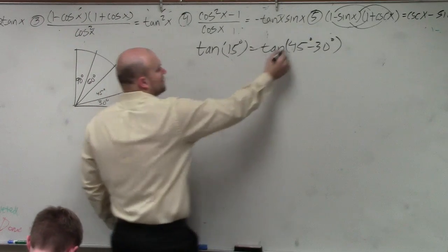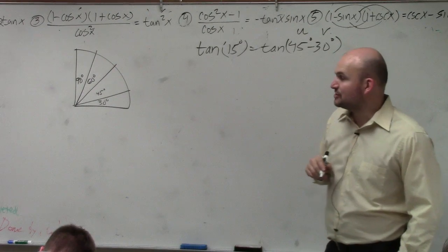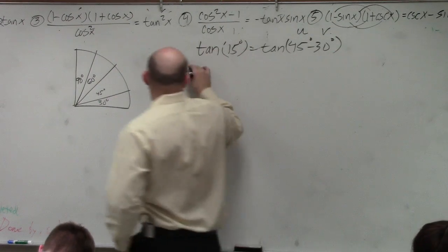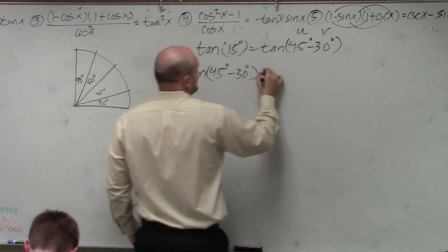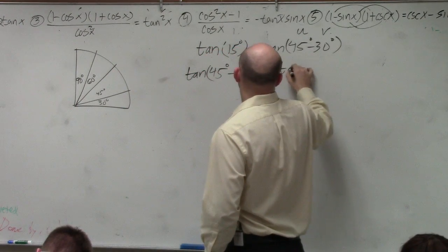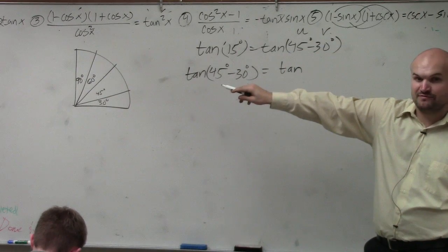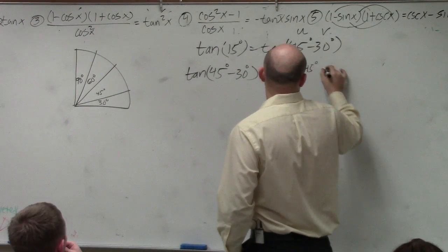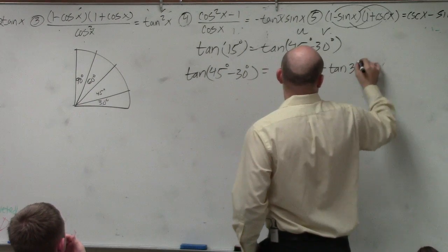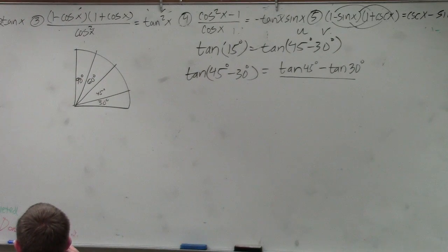So to go ahead and do this, I'll say this is my u, this is my v. You guys have the formulas now in front of you as well as up there. Tangent of 45 minus 30 degrees is equal to the tangent of u. Now we're doing subtraction, so subtraction is the bottom sign. The bottom sign between tangent of u and tangent of v is subtraction. So I'm going to do tangent of u, which is 45 degrees, minus tangent of v. Because it's minus, that's the bottom of plus or minus, so you use the bottom sign here, which is minus.